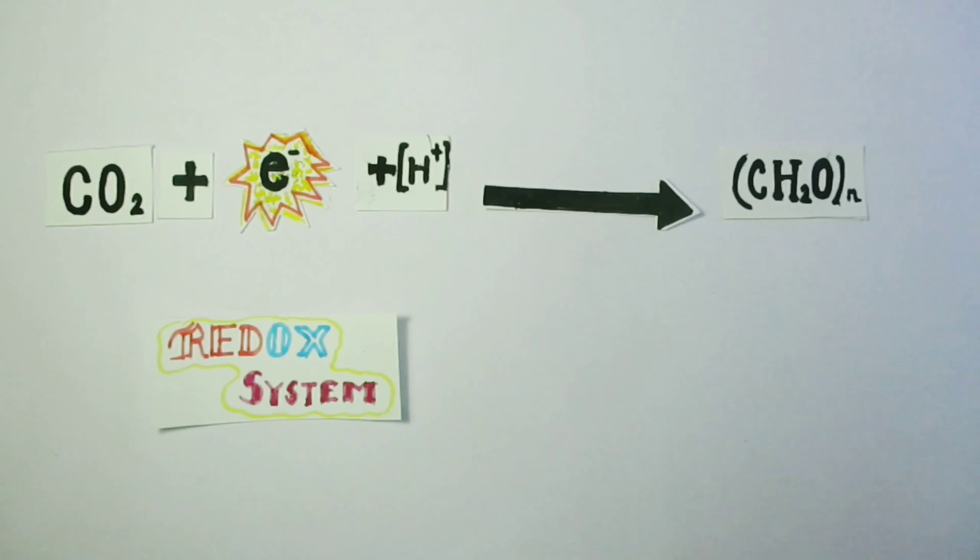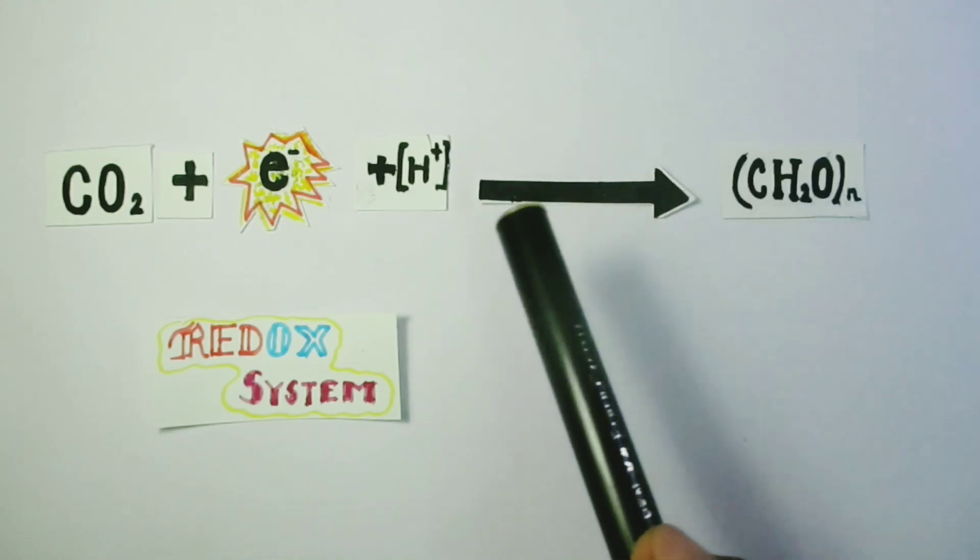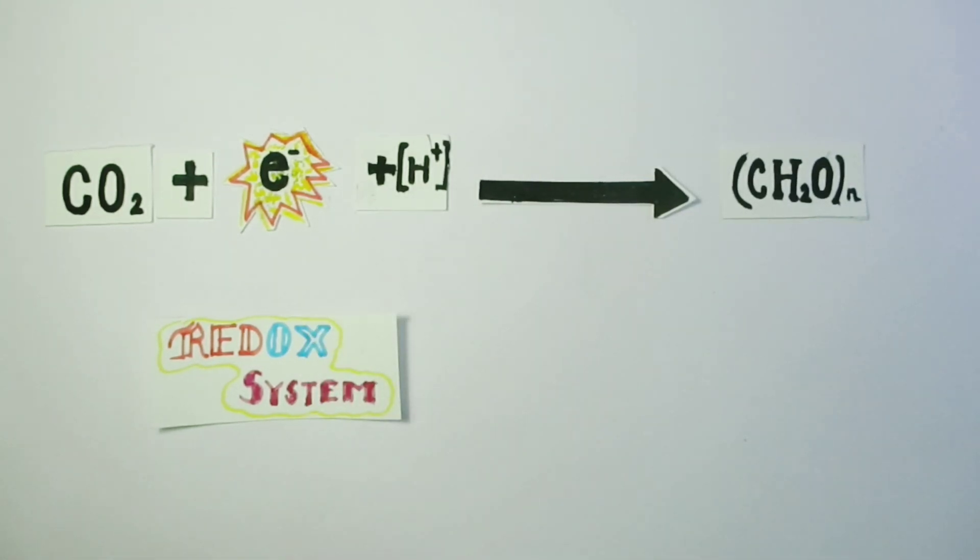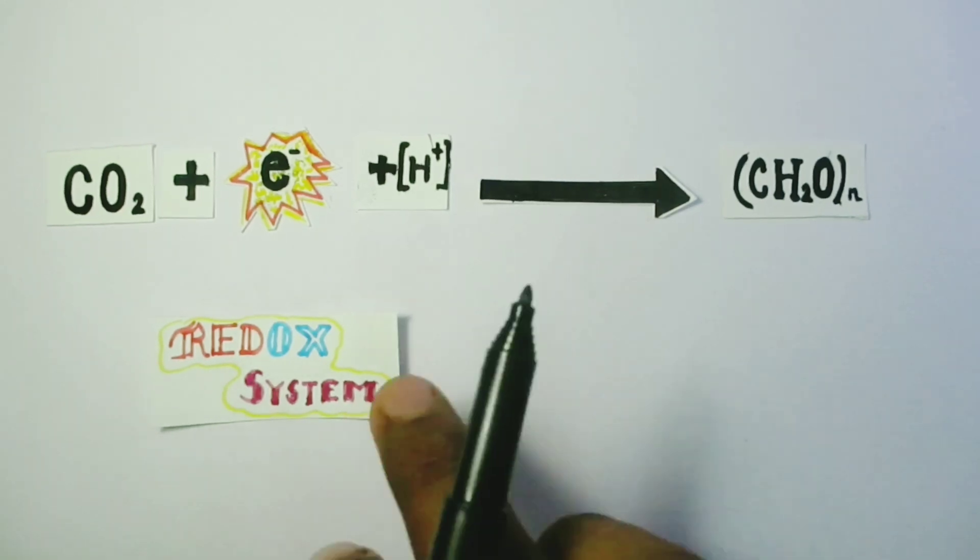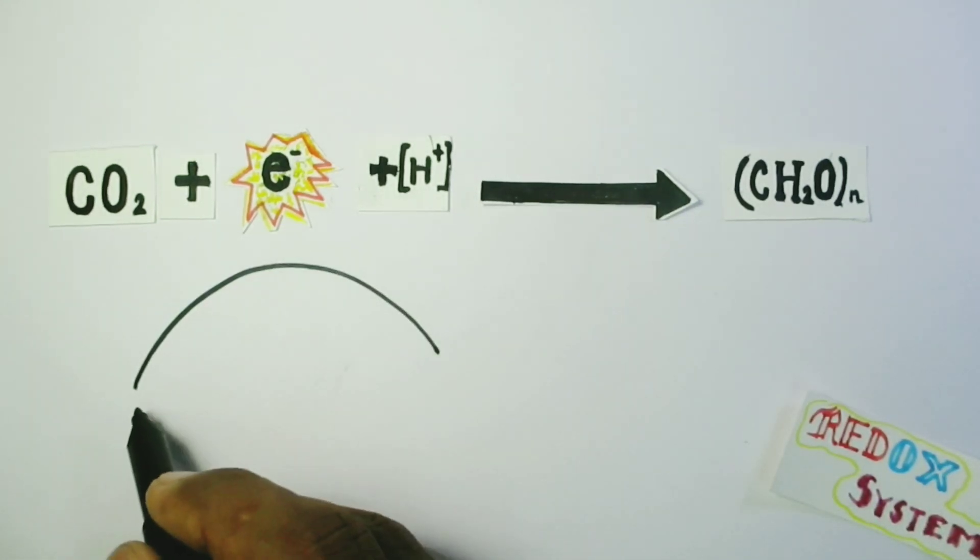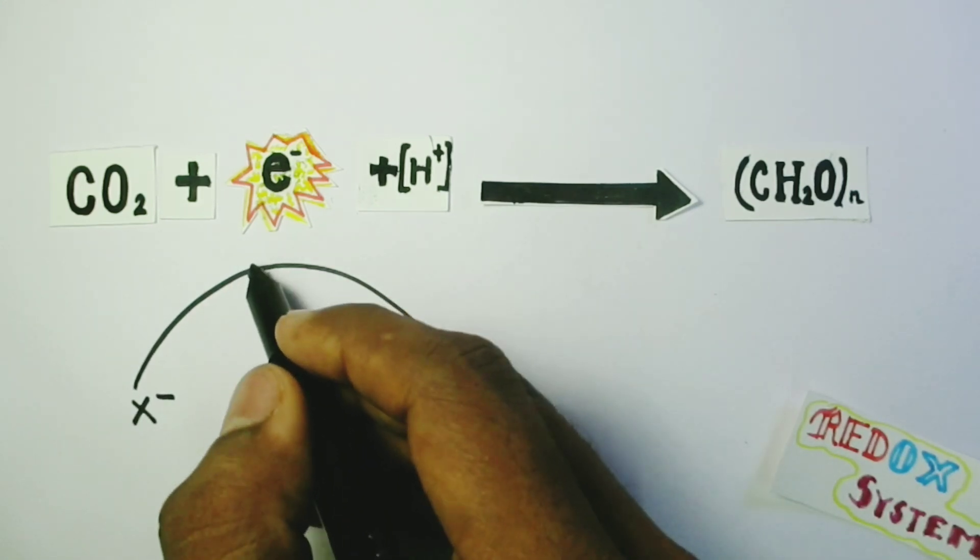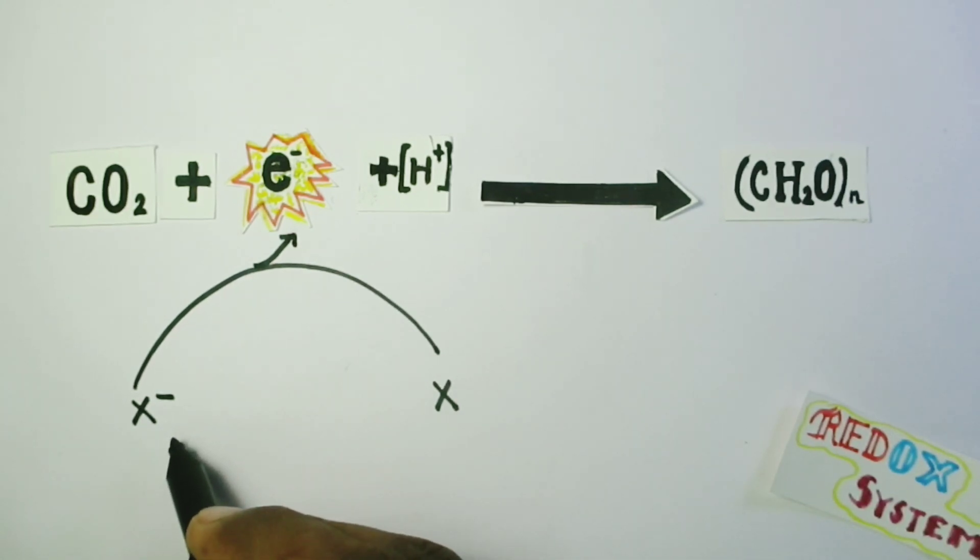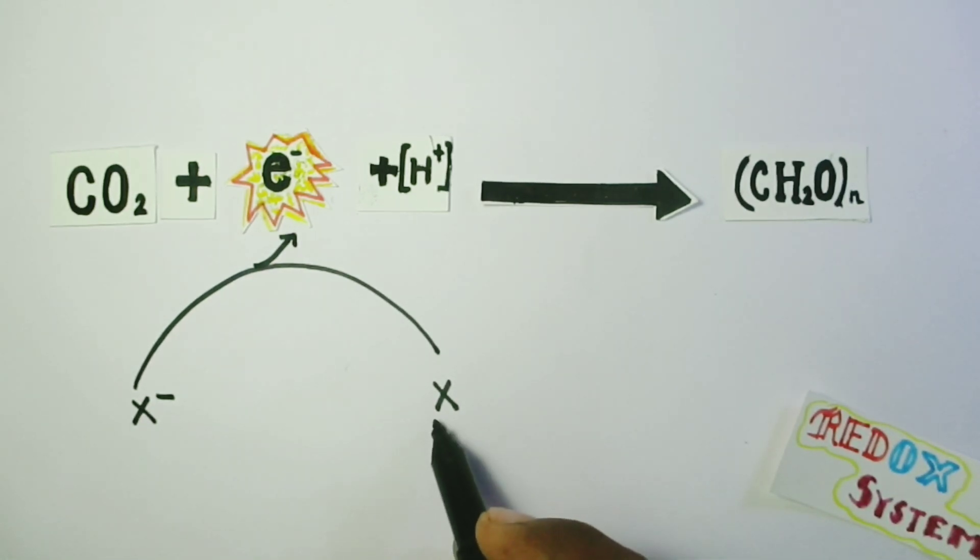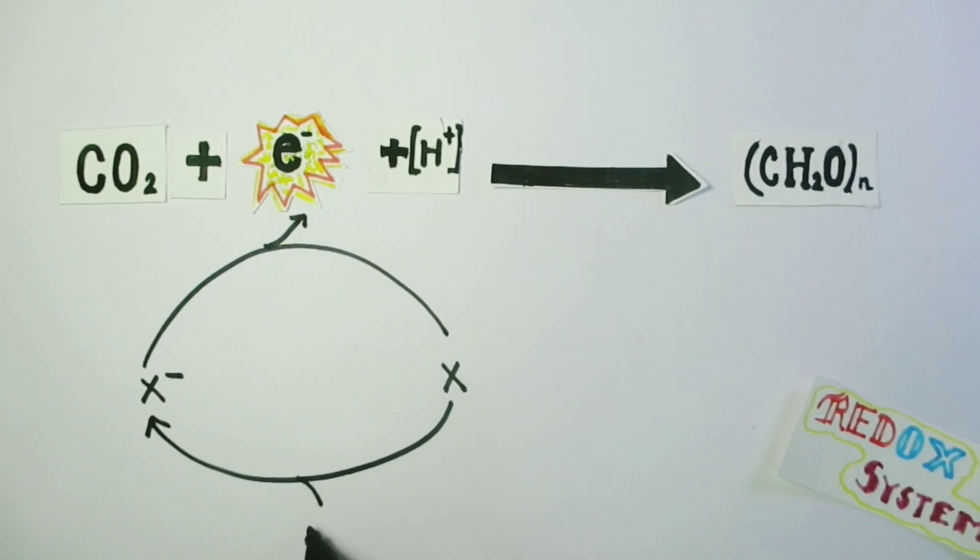After we have defined E0 prime, let us go back to our reaction, that is CO2 plus electron plus proton equals to CH2O n, that is carbohydrate. If this electron is coming from a redox system, suppose a redox system of its kind will be X minus and X redox system. In order to supply electron, X minus will be converted to X releasing an electron. In order to continue this process, X also should be able to convert it into X minus form. And in order to do so, it needs electron from another redox system.